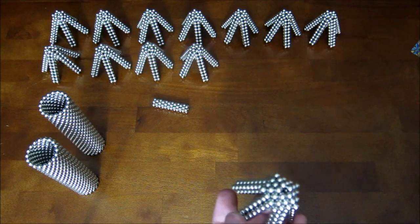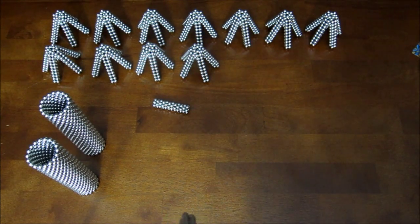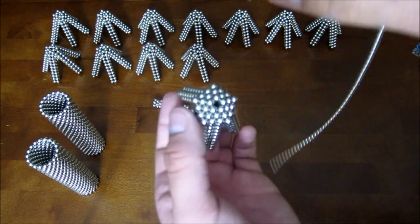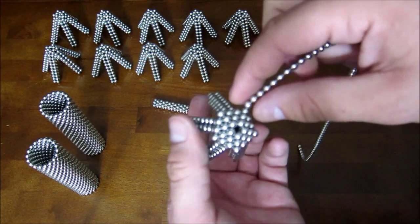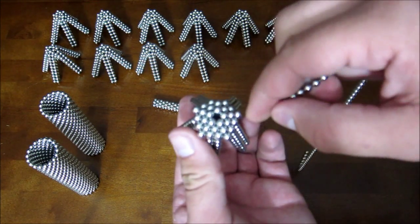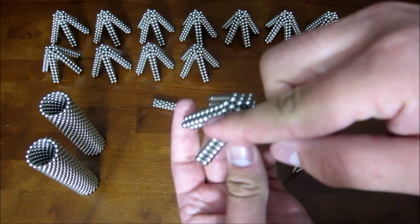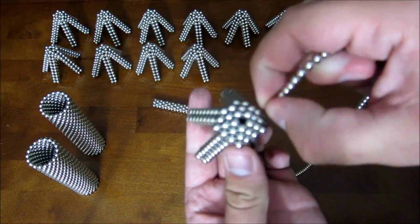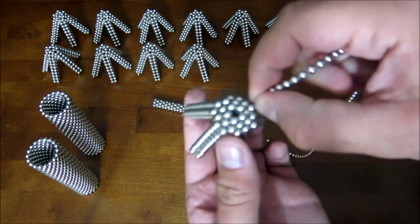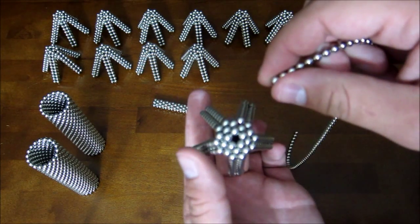And what you need to do, my chain is getting away from me, you need to take a chain though and pull off these 5 outside corner magnets that are just kind of hanging out there. Just like that.